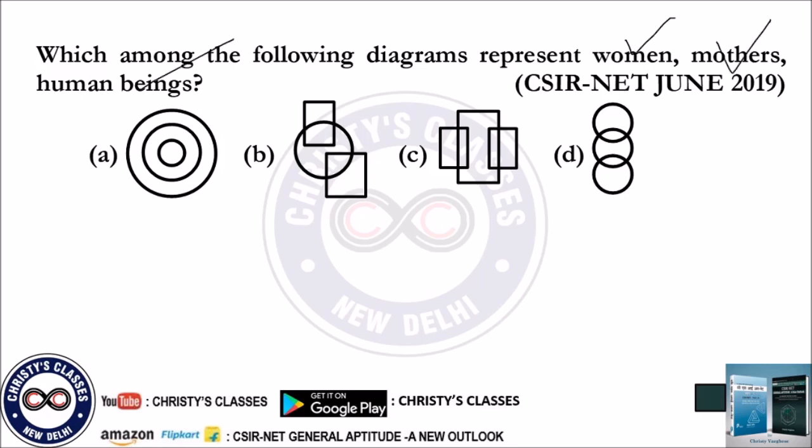Note that the order may not be as given — woman may not be the first set, mothers may not be the second set, and human beings may not be the third set. If you think in detail, the mother set will be a subset of the woman set, and the woman set should be a subset of the human being set, because all mothers are women and all women are human beings.